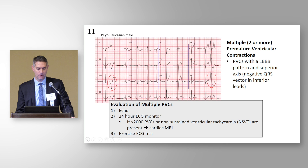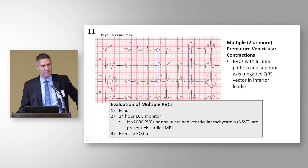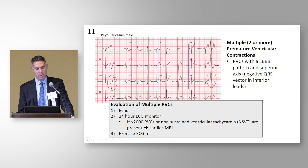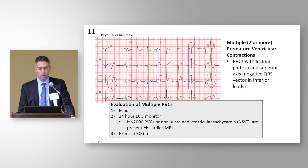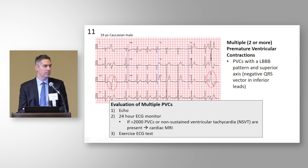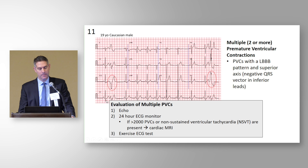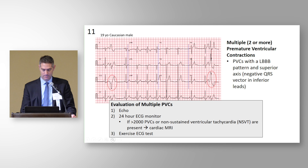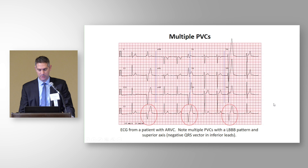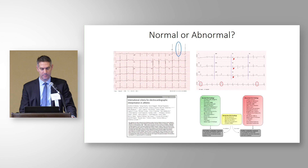For two or more PVCs, based on international recommendations, we evaluate PVC burden via 24-hour Holter monitor. If there are more than 2,000 PVCs in 24 hours, or non-sustained ventricular tachycardia is present, the person is in a higher-risk group for structural heart disease. Those individuals need more than just an echo — they also need a cardiac MRI. The workup for two or more PVCs includes: echocardiogram, 24-hour Holter, and exercise ECG test. If PVC burden is high, add cardiac MRI. Here's another example of multiple PVCs — and they get that same workup.